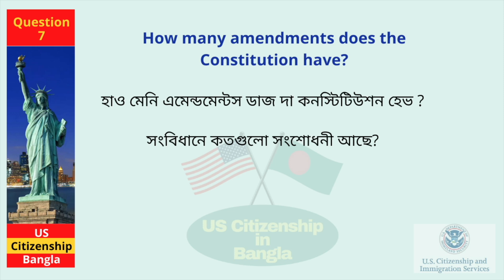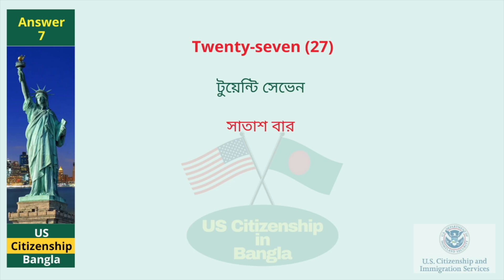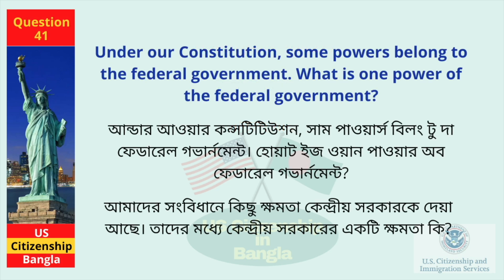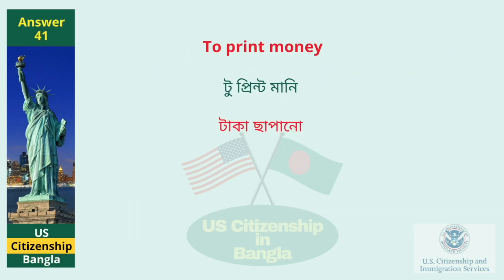How many amendments does the Constitution have? 27. Under our Constitution, some powers belong to the federal government. What is one power of the federal government? To print money.